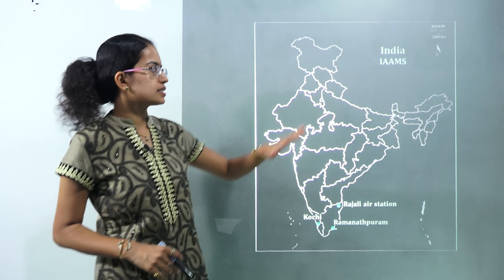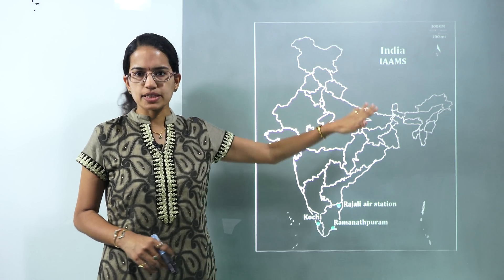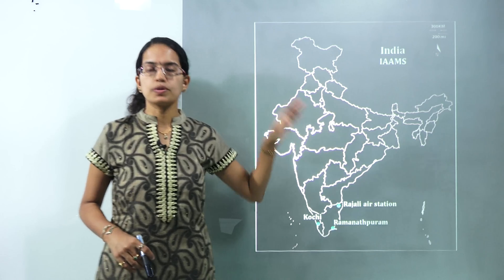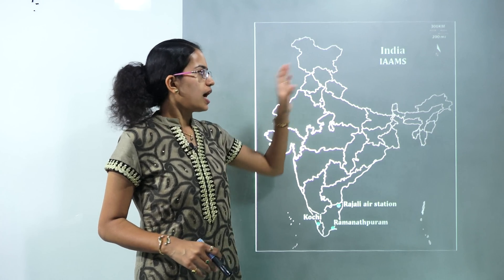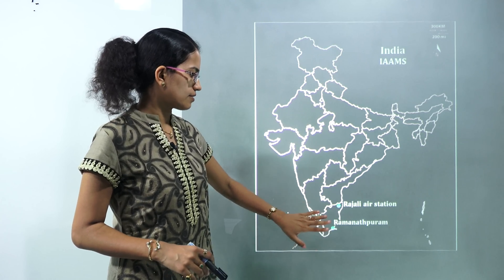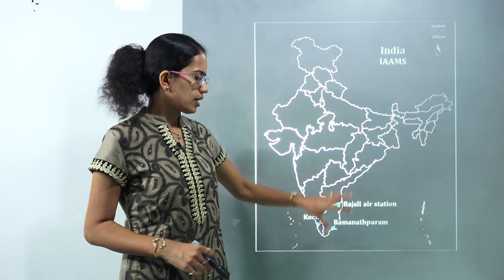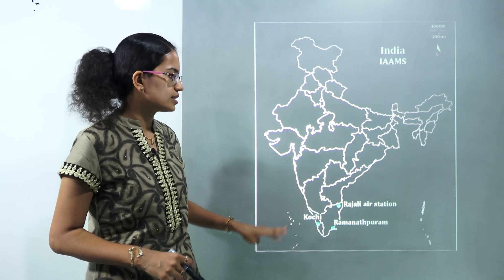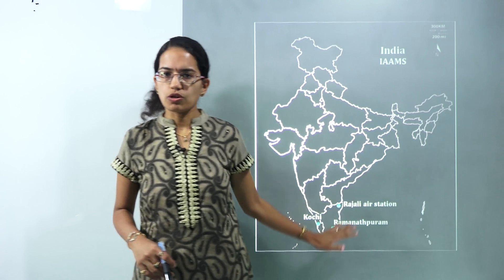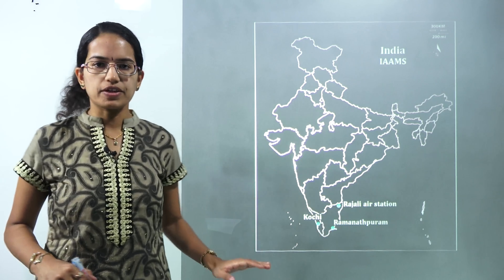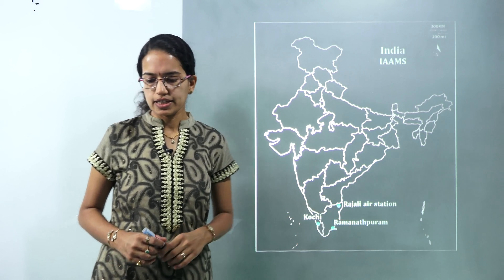The first map location is the IAAMS — the Integrated Automatic Aviation Meteorological Systems. We have a new centre upcoming at Kochi, and we already have two existing ones: one at Rajali and the other at Ramnathpuram. All three locations are very important. Kochi would be the centre for the INS Garuda.